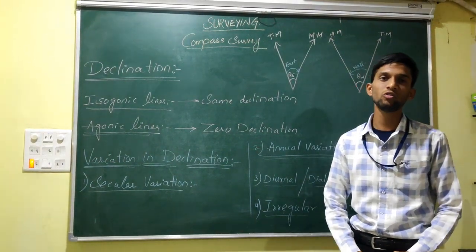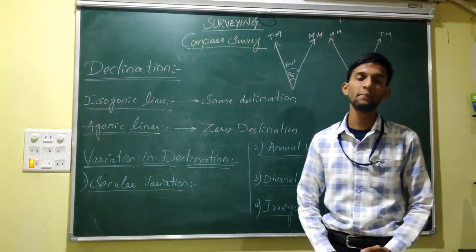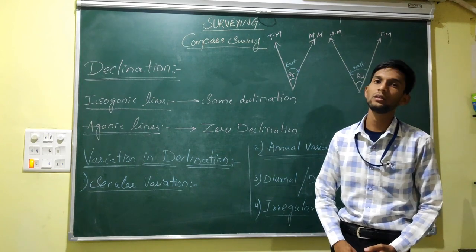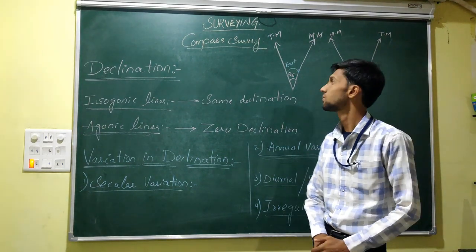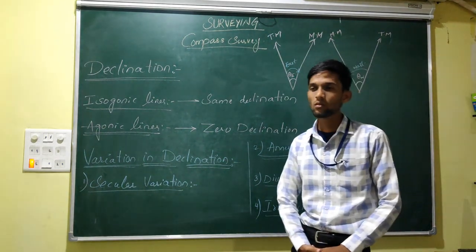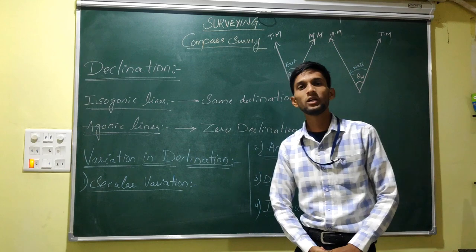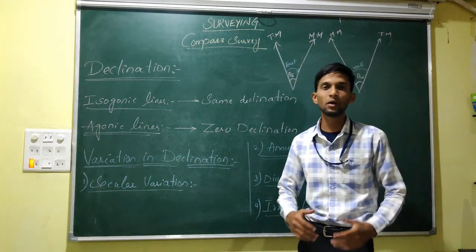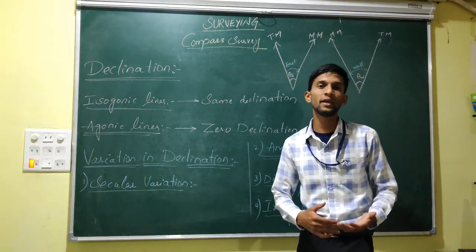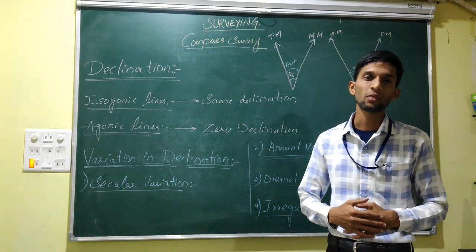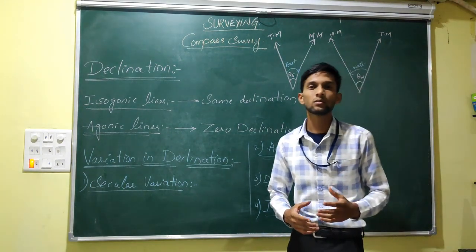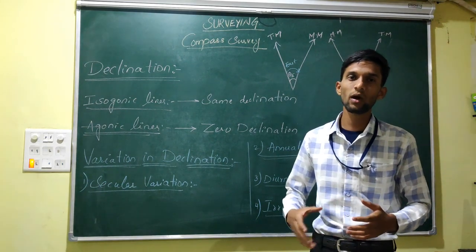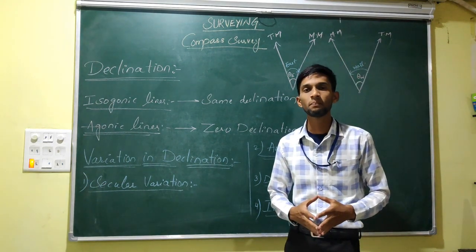Hello everyone, welcome to J.A.I.T. Candy and Symphony. Today's class, our topic is Declination. First of all, we have to know about true meridian and magnetic meridian. We have learnt these terms in our previous classes, so I am revising that.